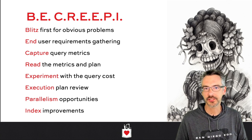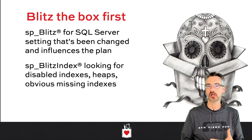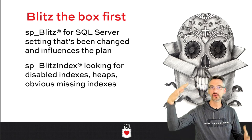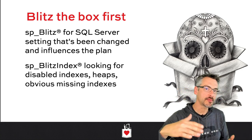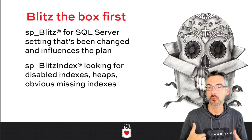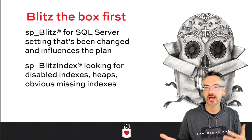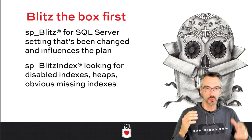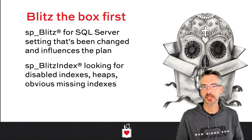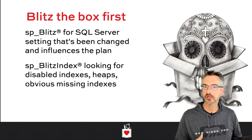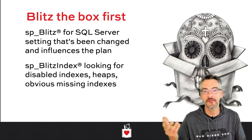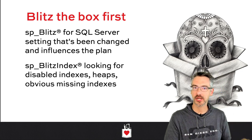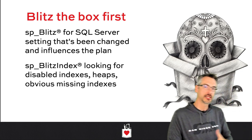In the Be Creepy process, I start out by Blitzing the box — I'll run sp_Blitz against the box and look for really big server-level problems. True story from earlier this week: one of the clients I went in to look at had half of their CPU cores disabled. That's why their queries were running slowly — no need to look at execution plans when you can see a problem that big on the server.